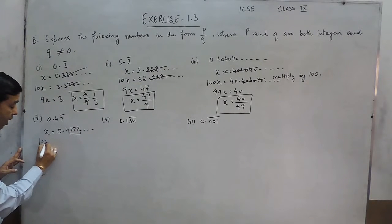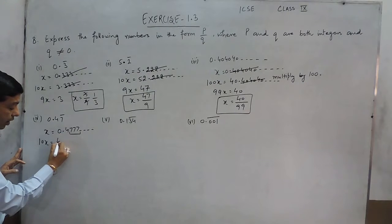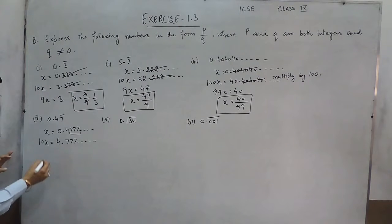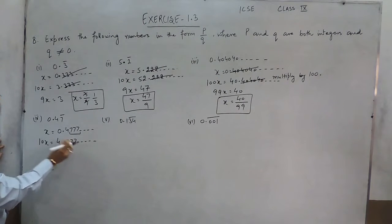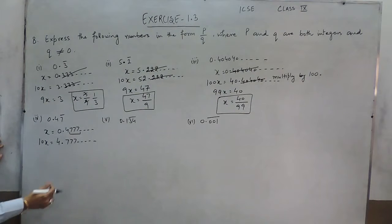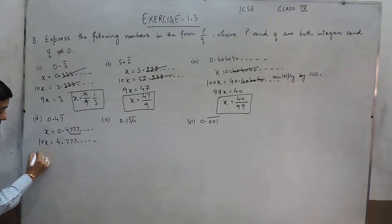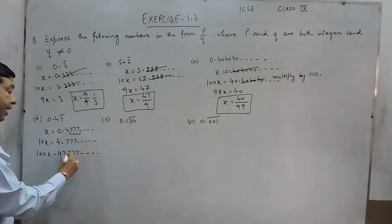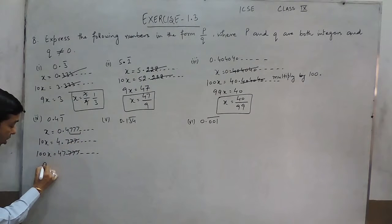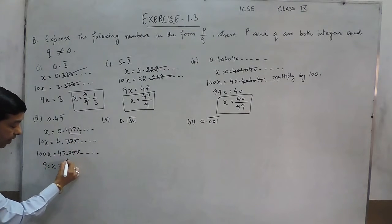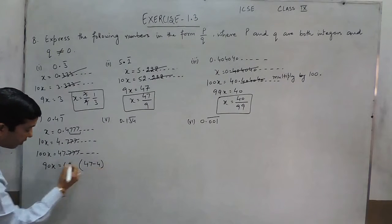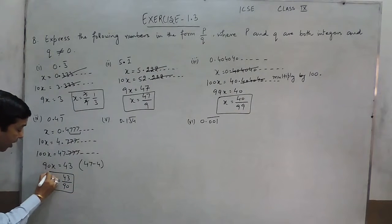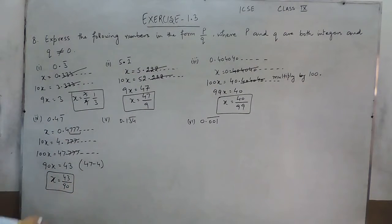When I multiply by 10, this 4 comes before the decimal place: it becomes 4.777 and so on. Now we know that only one digit is repeating, so this has to be multiplied further by 10. So 100x becomes 47.777 and so on. Subtracting the two, the repeating parts cancel out. So 90x becomes 43 — it is basically 47 minus 4 — and the value of x becomes 43 upon 90.